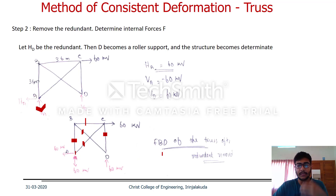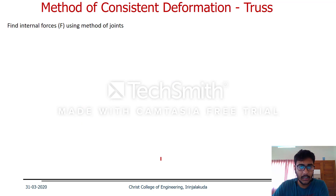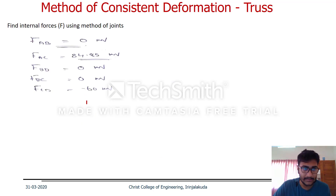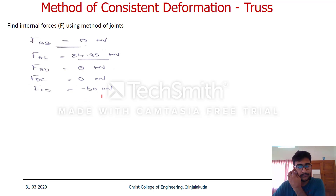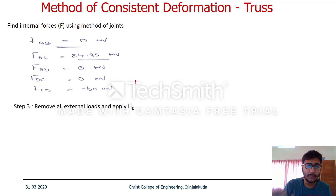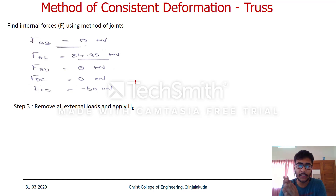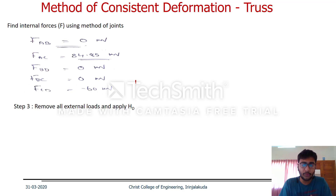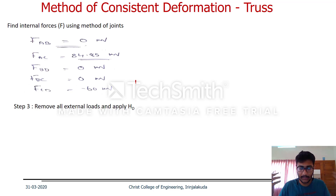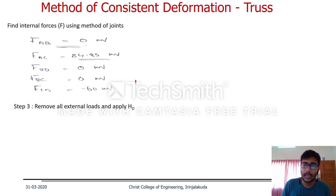The internal member forces from the applied loading are: AB = 0, AC = 84.85 kN, BD = 0, BC = 0, CD = minus 60 kN. Step 3 is to remove all external loads and apply a unit load of 1 kN at the location of the redundant to find the small f forces.